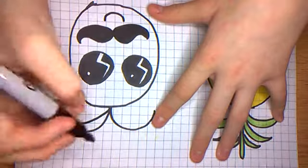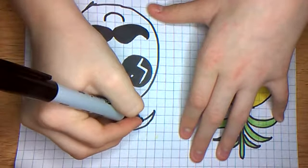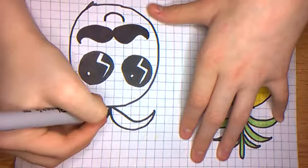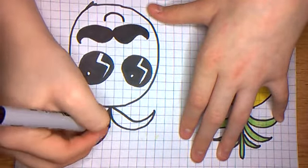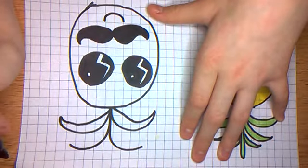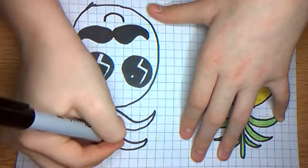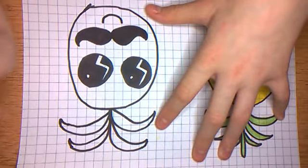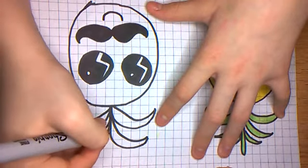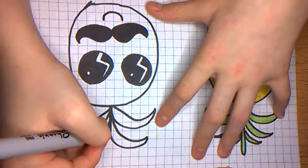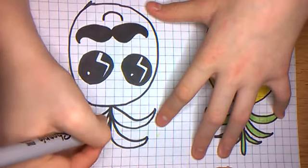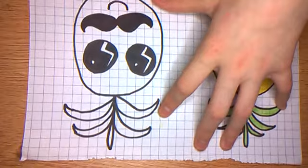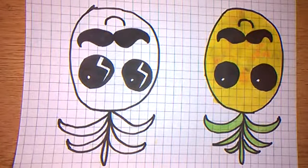And then what you want to do is you want to bring it up again and do that again. And then you want to add that little top bit there. And then your drawing bit is completely done. Now we're on to the coloring.